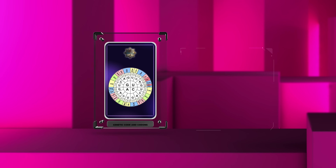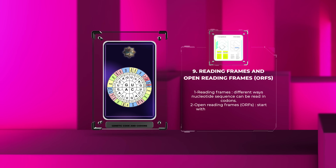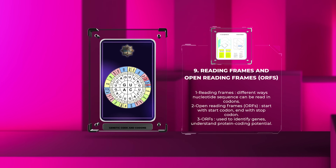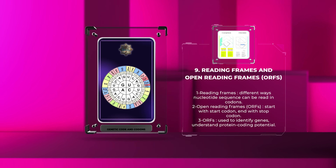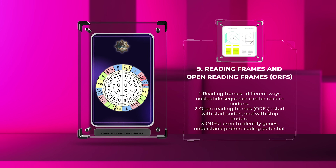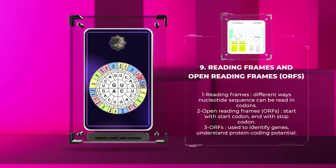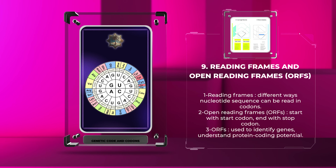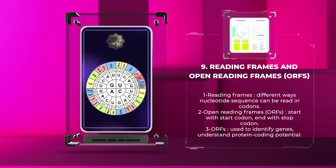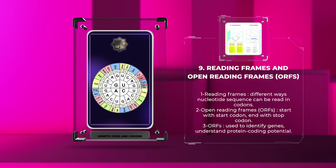Reading frames are the different ways a nucleotide sequence can be read in sets of three codons. Open reading frames, or ORFs, are protein-coding regions that start with a start codon and end with a stop codon. Researchers study these to identify genes and understand an organism's protein-coding potential.